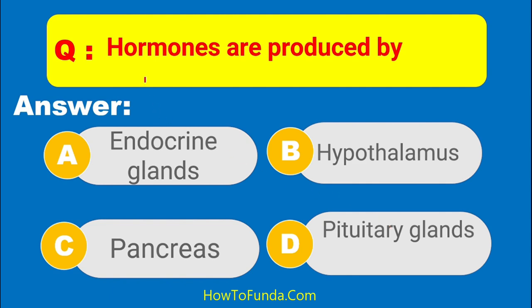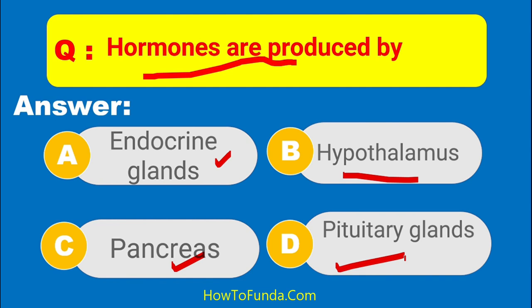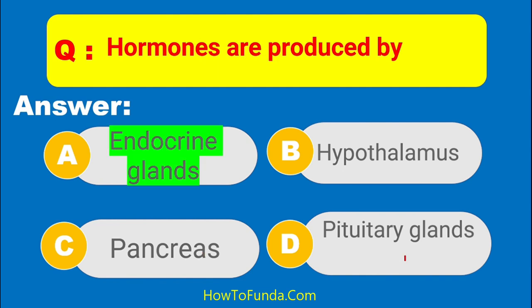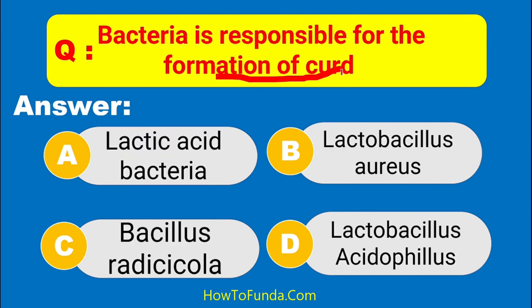Which produces hormones in the human body? The hormones are produced by the endocrine glands. Which bacteria is responsible for the formation of curd?